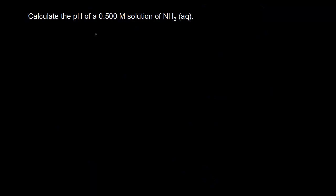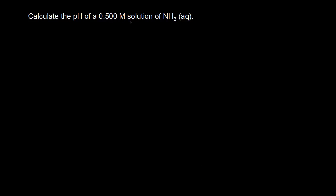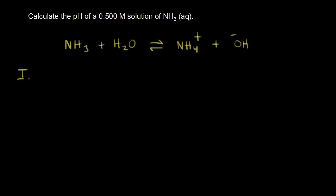We need to calculate the pH of a 0.500 M aqueous ammonia solution. NH3 plus H2O: ammonia accepts a proton from water to form NH4+ (ammonium), and water loses a proton to become OH⁻. Setting up the ICE table: initial concentration of NH3 is 0.500 M, and the initial concentrations of NH4+ and OH⁻ are both zero.